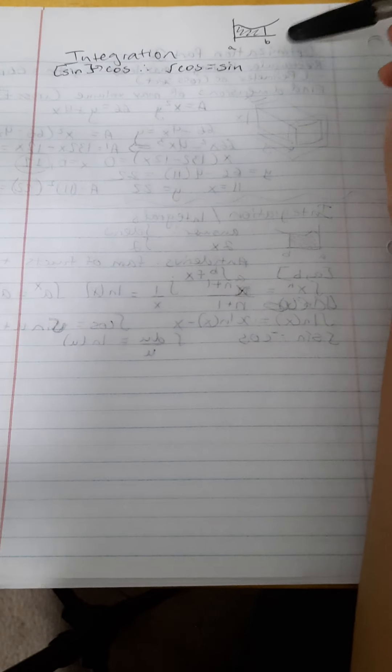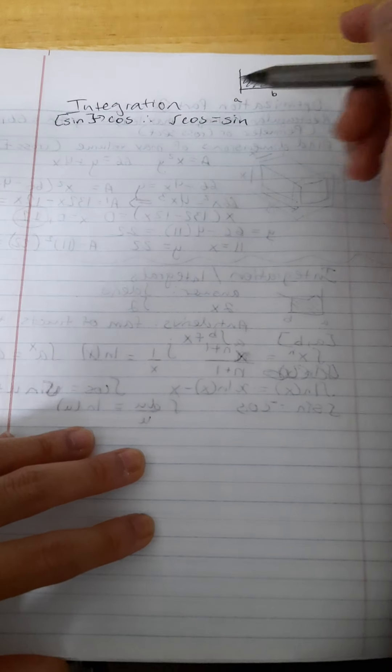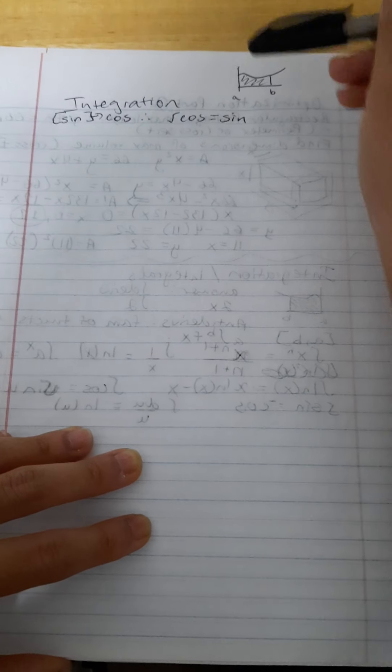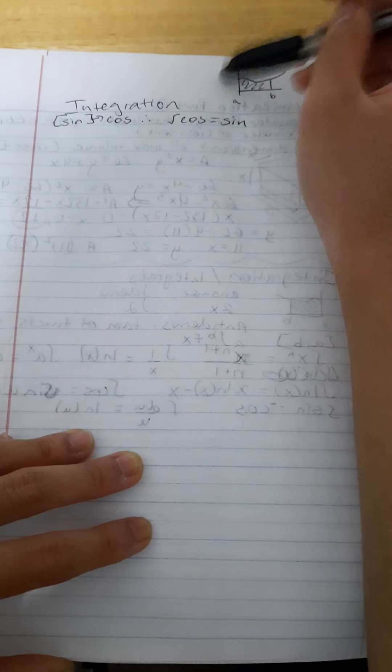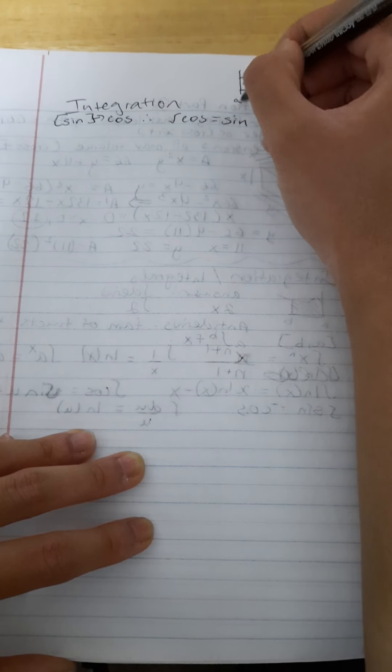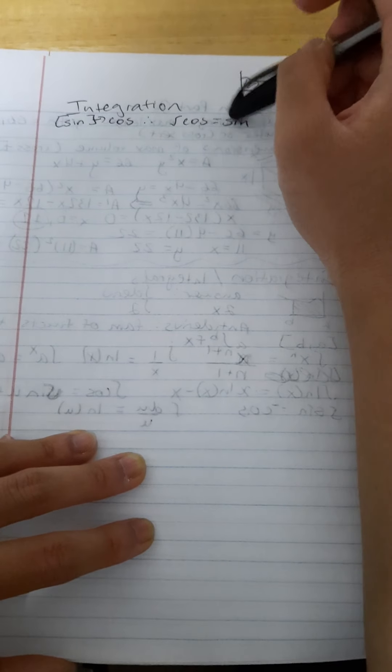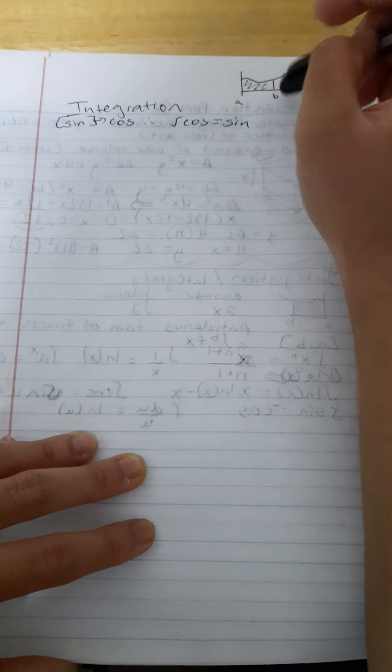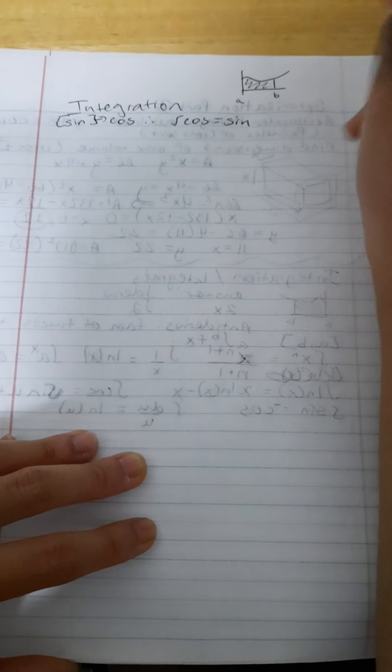And it's also represented by an area underneath the curve, and also you could find like the values if it's applied to real life. So like if function was velocity, for example, you could find the total distance by adding the initial. Sometimes if you're given an initial, you add the initial, and then take the integral of that bound, and then you'll get the total distance covered by that particle.